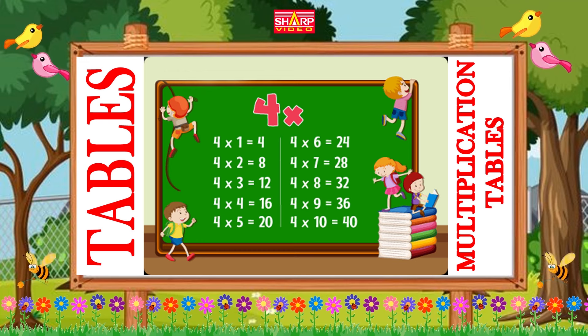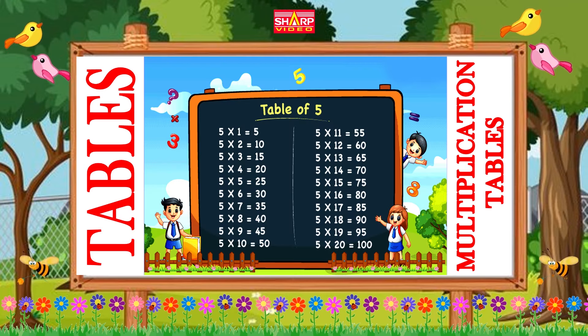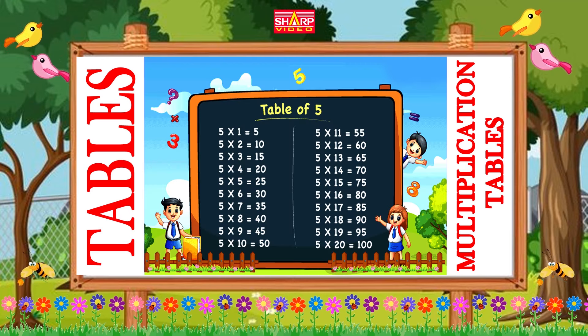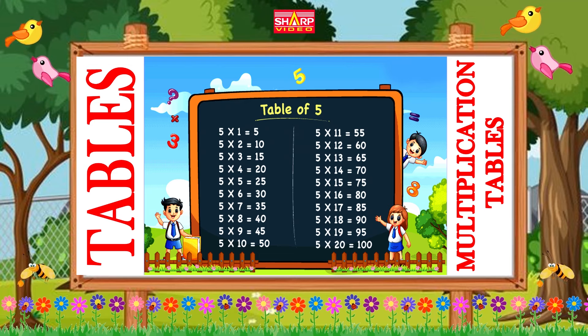Four tens are forty. Table of five. Five ones are five, five twos are ten.